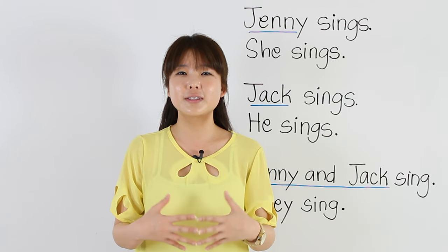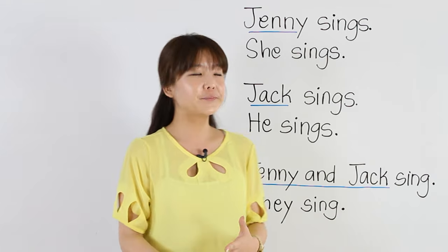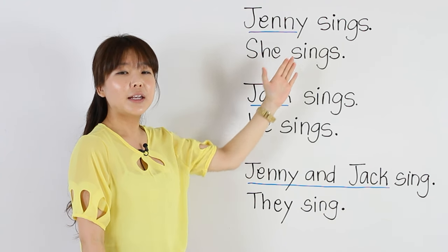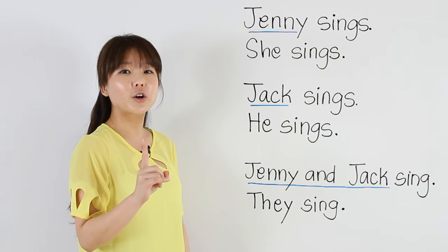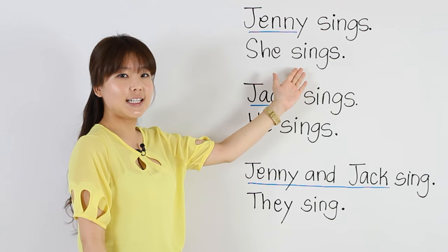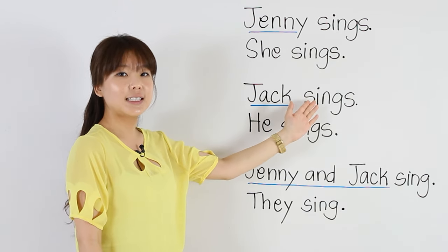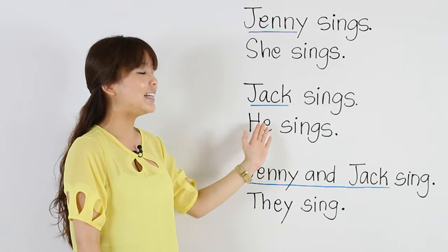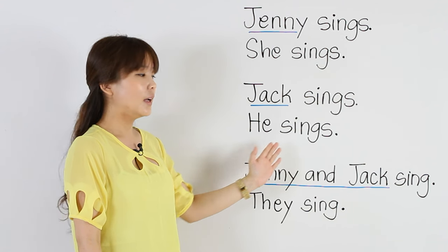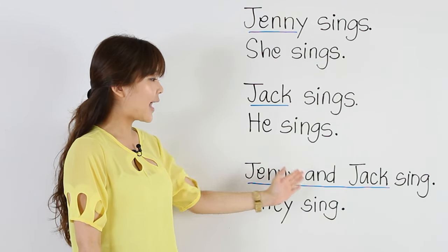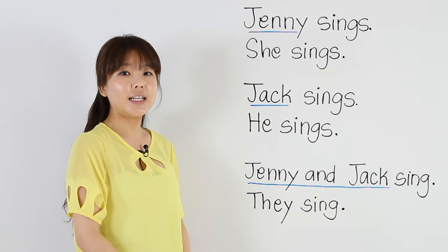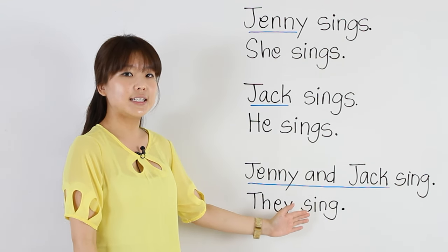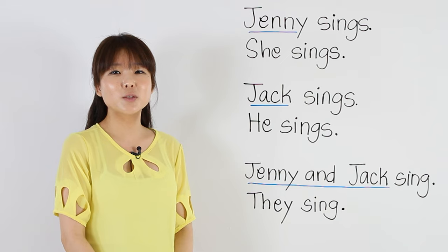Let's practice together with subjective pronouns. The first sentence on the board says, Jenny sings. Jenny is one girl, so we can say, She sings. Jack sings — Jack is one boy, so we have to say, He sings. The last sentence says, Jenny and Jack sing. Jenny and Jack are two people, so we have to say, They sing.